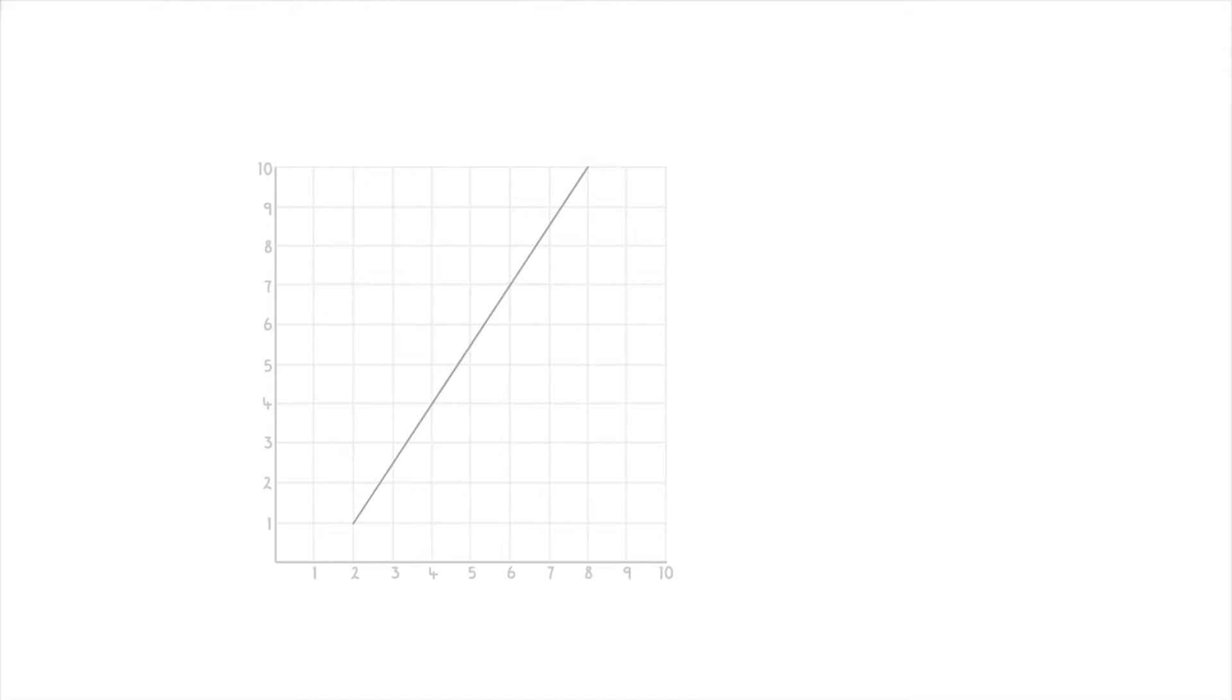In this video, we're going to look at how we can use ratios to find the coordinates of an unknown point along a line. For example, imagine that we had this graph here, with a line segment between A at 2, 1, and B at 8, 10.